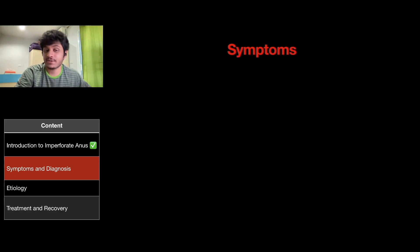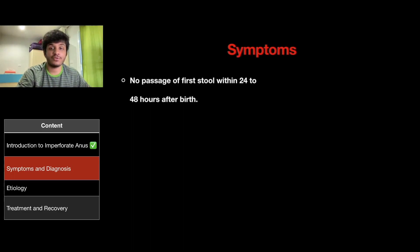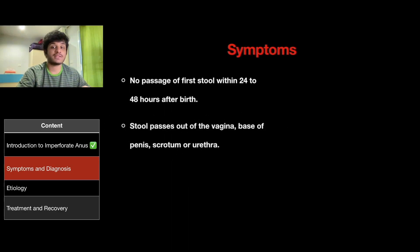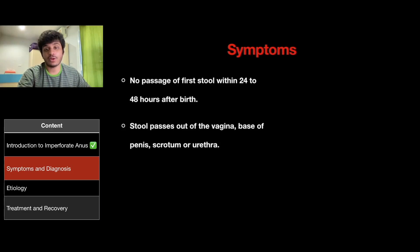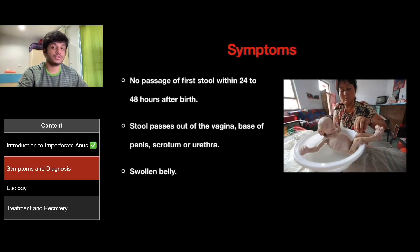Now let's move on to the symptoms of this disease. There are several symptoms for the imperforate anus: no passage of first stool within 24 to 48 hours after birth; stool passes out of the vagina, base of the penis, scrotum, or the urethra; or the baby would have a swollen belly. The picture on the right dates back to 2015, where a baby in China was born with the disease. You could see his swollen belly.